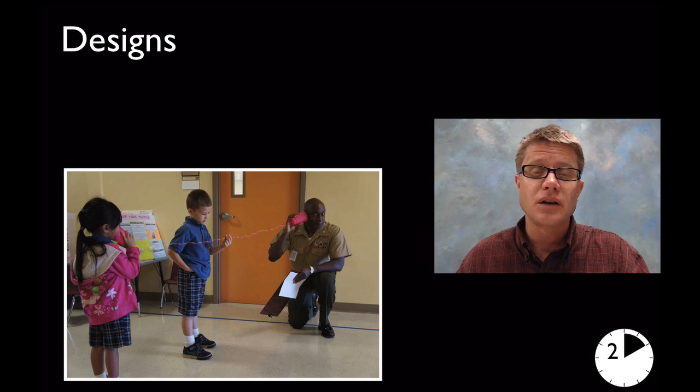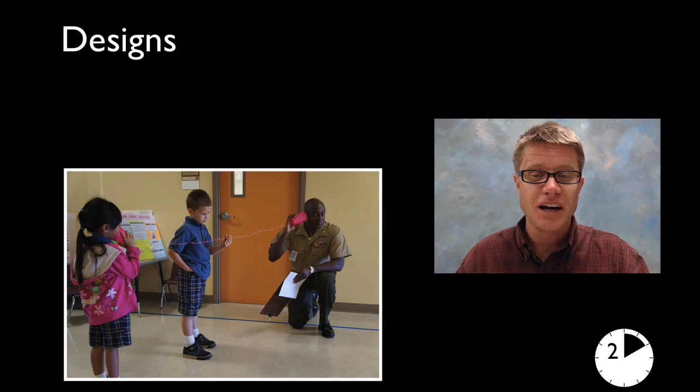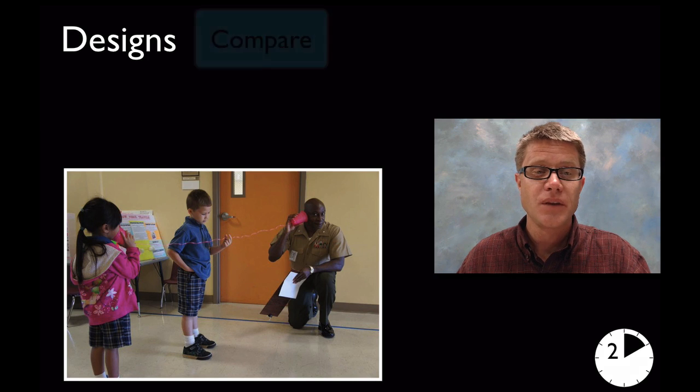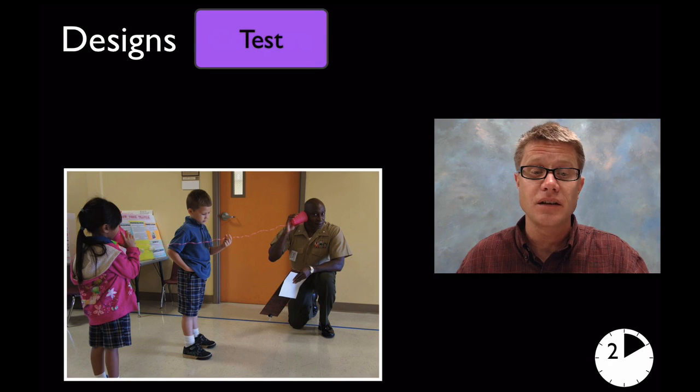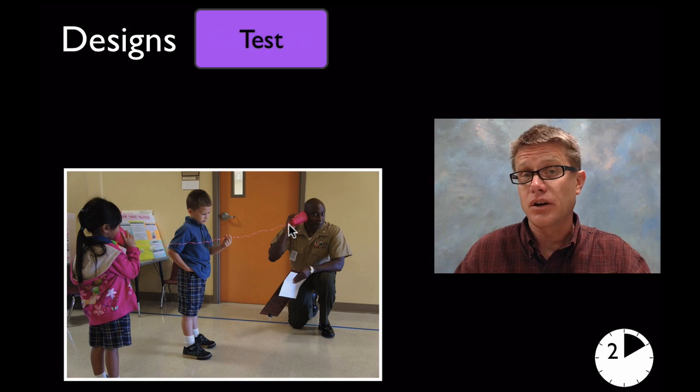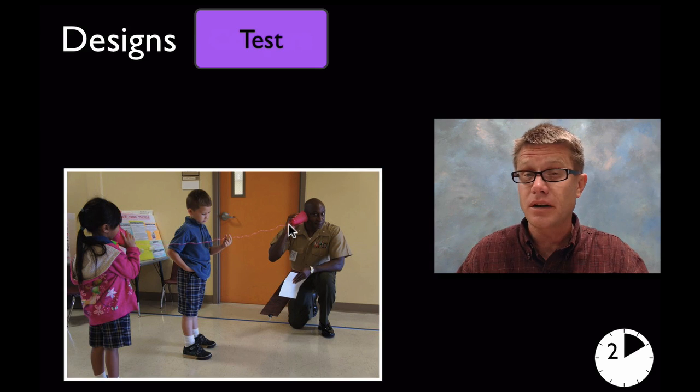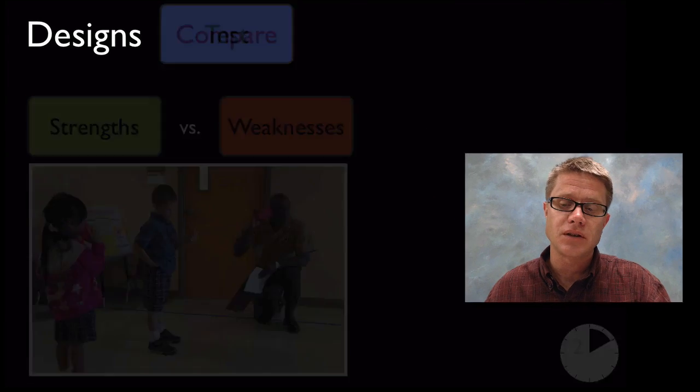So how do we teach this? In the lower elementary grades, you want your students building designs. Here they're trying to build a little telephone to communicate between two people. You can see it's not going to work very well because the string isn't very taut. You want them building, comparing, and testing their designs. How could you do this with this little telephone? We could do it with a very taut string or very loose. We could use different things for the string, like wire for example.